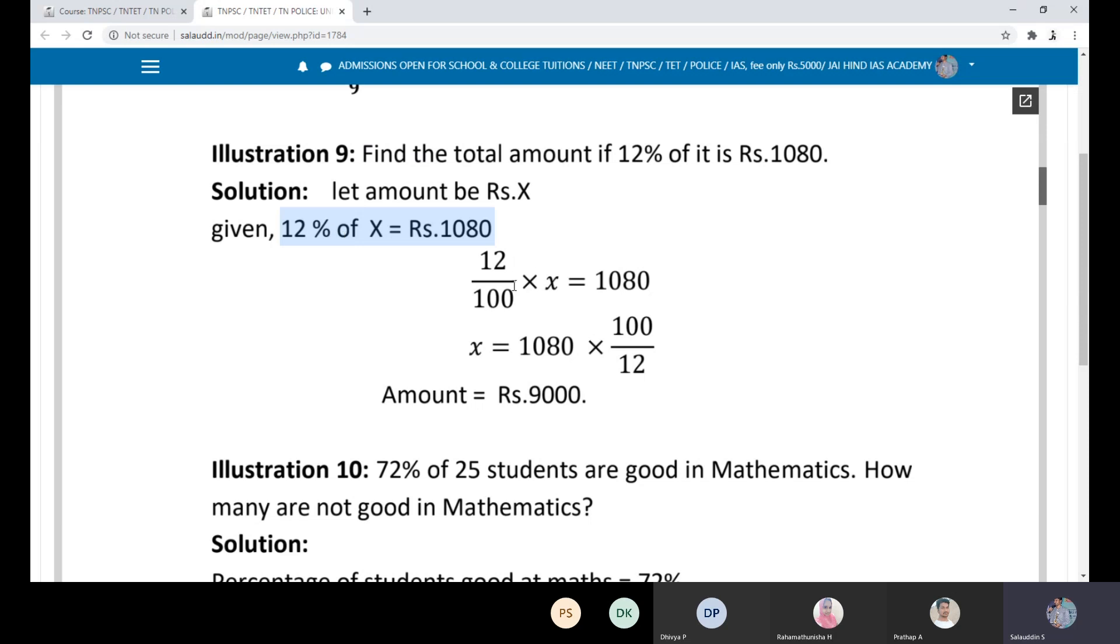We write this as (12/100) times X equals 1080. So X equals 1080 times 100 divided by 12. We can simplify: 90 times 100 equals 9000. The amount is Rs.9000.